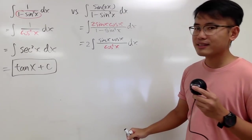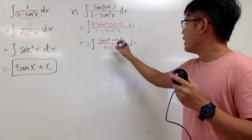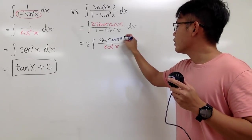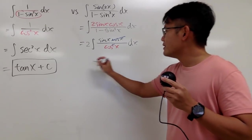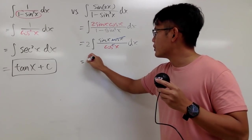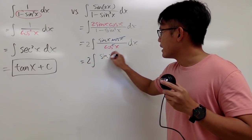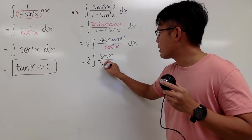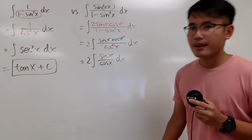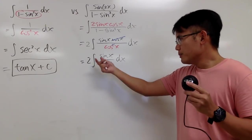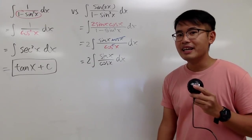Don't forget to put the dx. From here I can cancel the cosine x with one of those on the bottom. So this is just 2 times the integral of sine x over cosine x, dx.